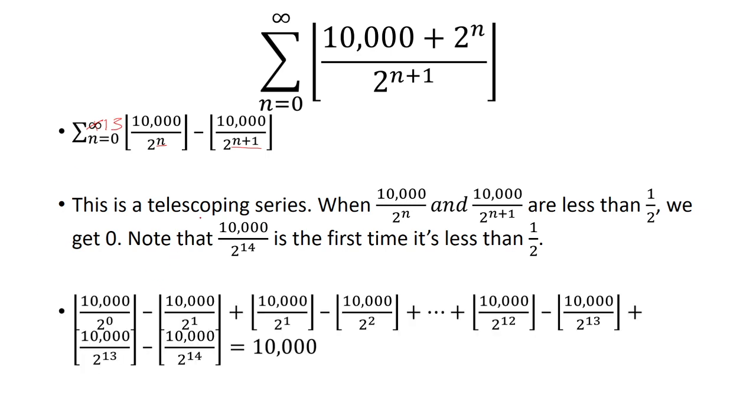And now I'm going to list the terms out. So the first term is when n equals 0. Plug that in. n equals 1, all the way up to n equals 13. Now the good thing is that we see a lot of these will cancel.